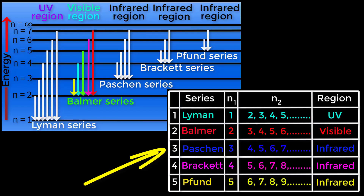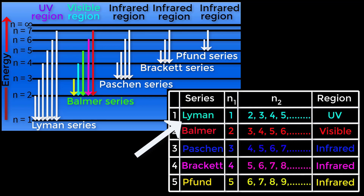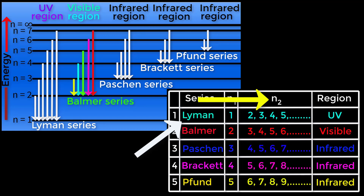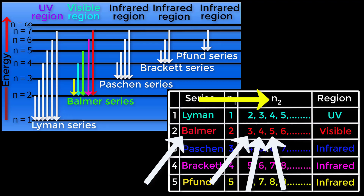Look at this tricky chart — it contains all the information about the spectral series at once. For Lyman series, n1 equals 1 and n2 equals 2, 3, 4, 5, and so on according to the question; the region is ultraviolet. For Balmer series, n1 equals 2 and n2 equals 3, 4, 5, 6, and so on according to the question; the region is visible.